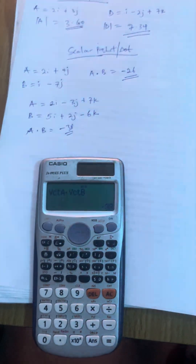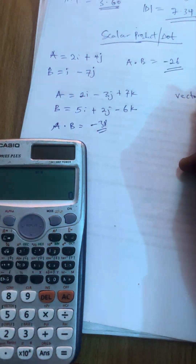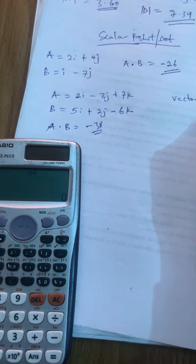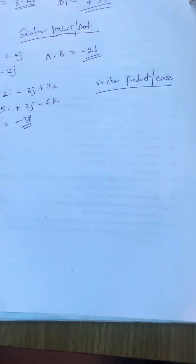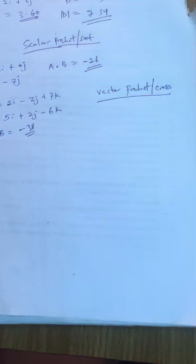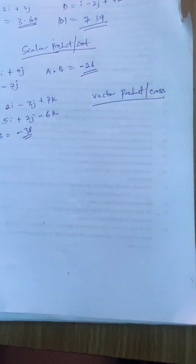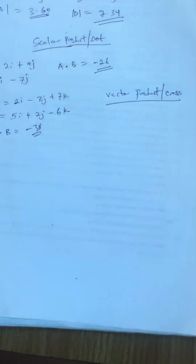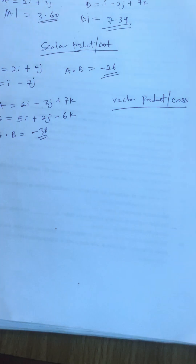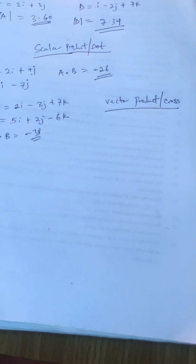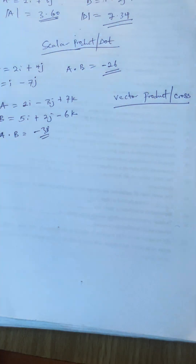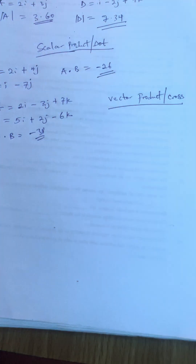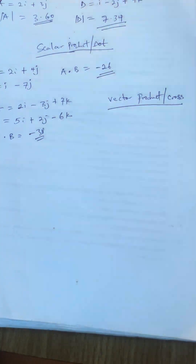Aside from scalar products, they can ask you to find the vector product, also known as the cross product. Don't forget: if you cross two vectors, your answer must be a vector — it must have both magnitude and direction. This is unlike the scalar (dot) product where you get just a magnitude value alone.